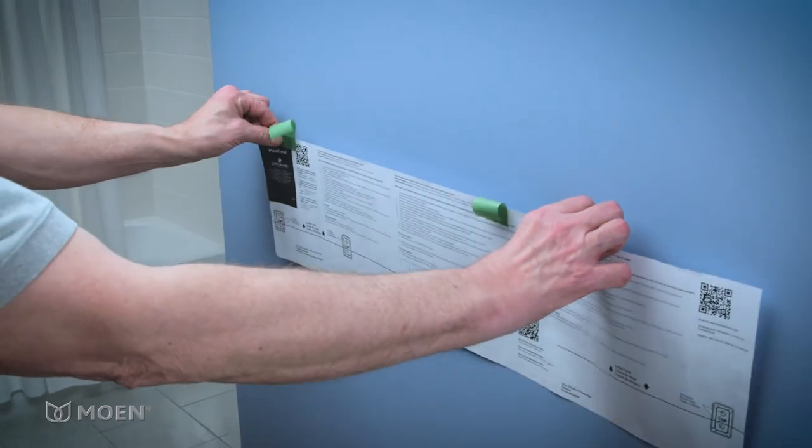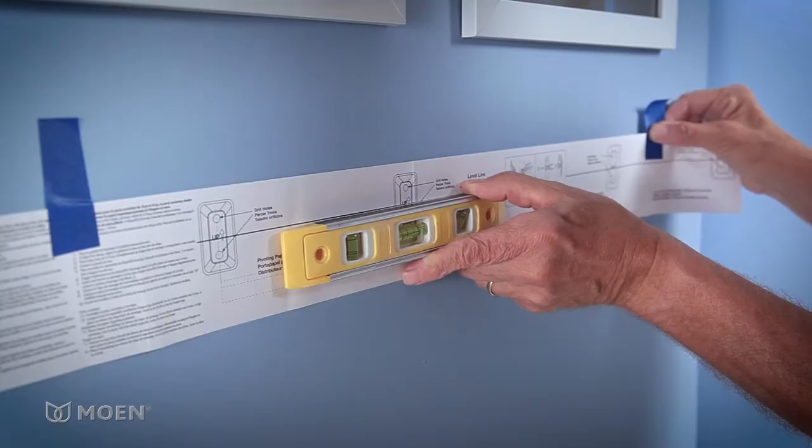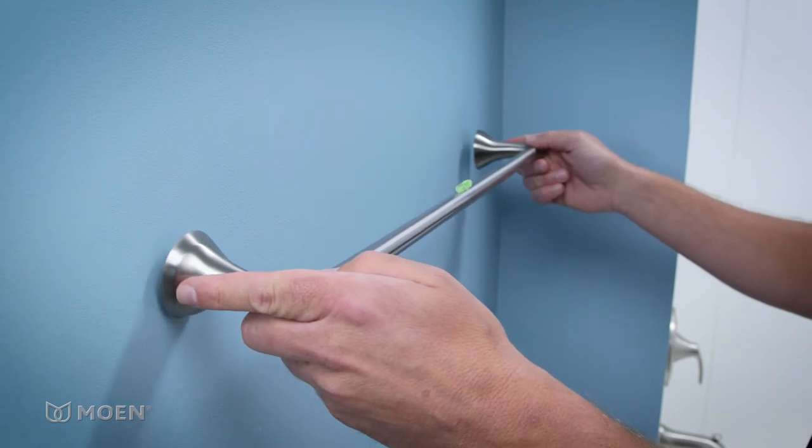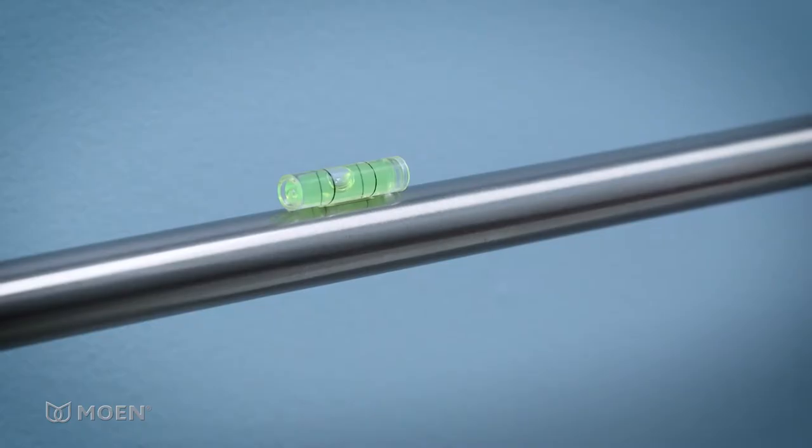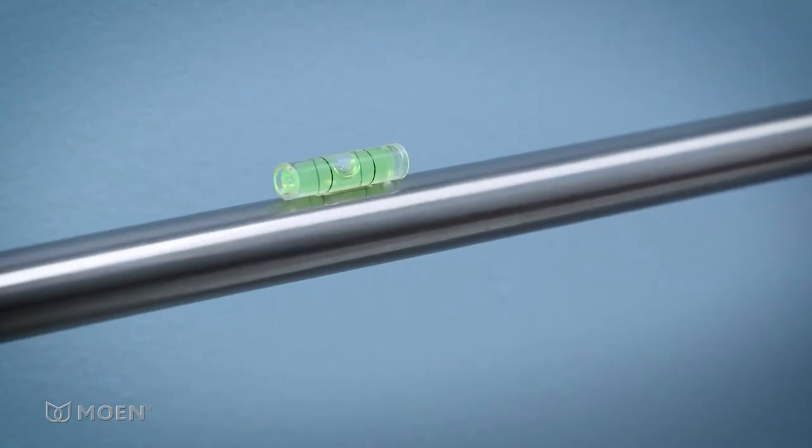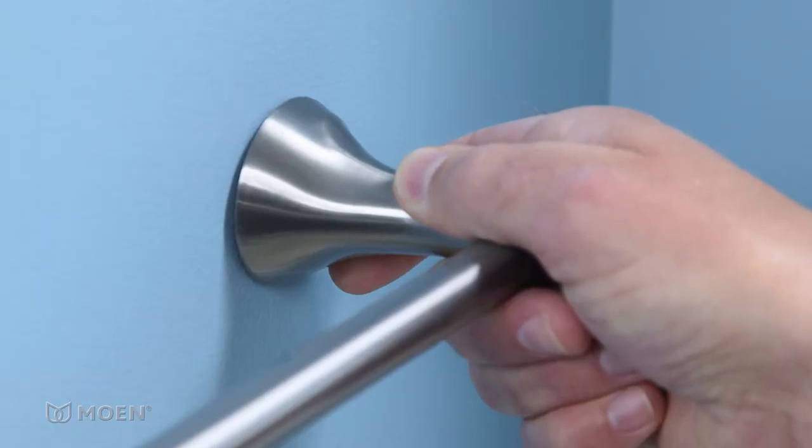No more fussing with a paper template and tape or balancing a level to get it straight. With Press & Mark, you simply choose a location, use the included self-adhesive level to ensure your product is straight, then press and mark firmly against the wall.